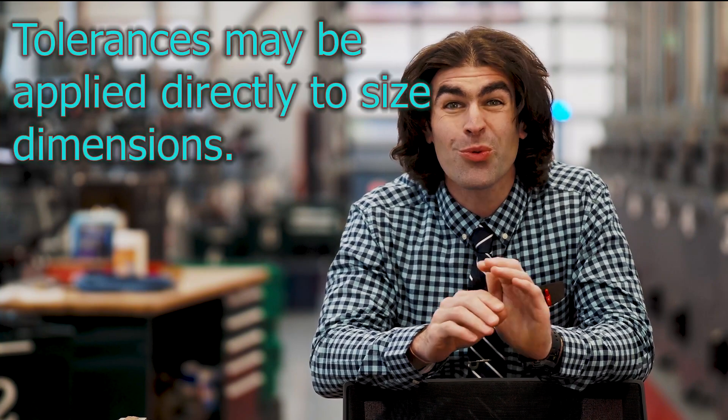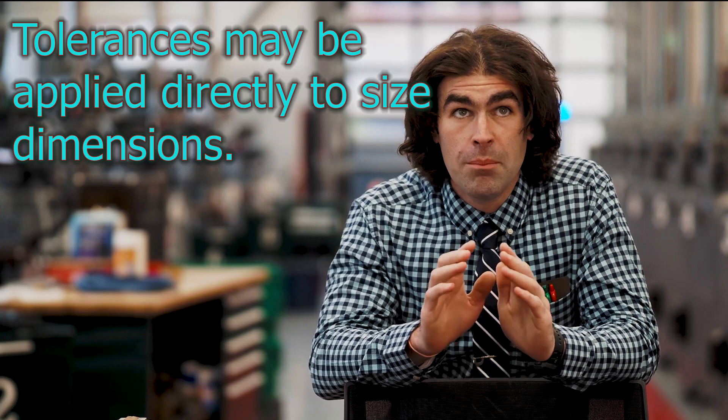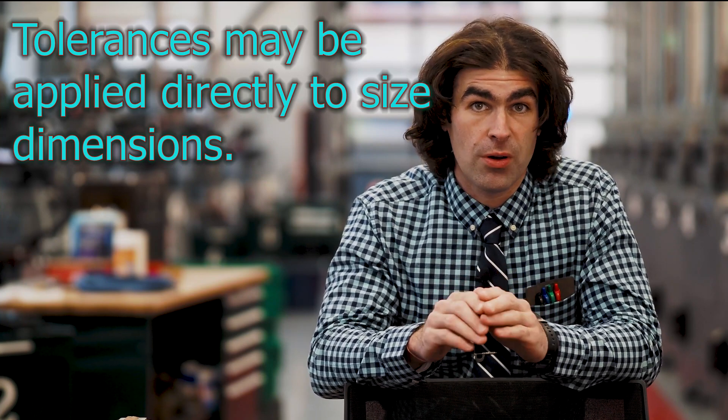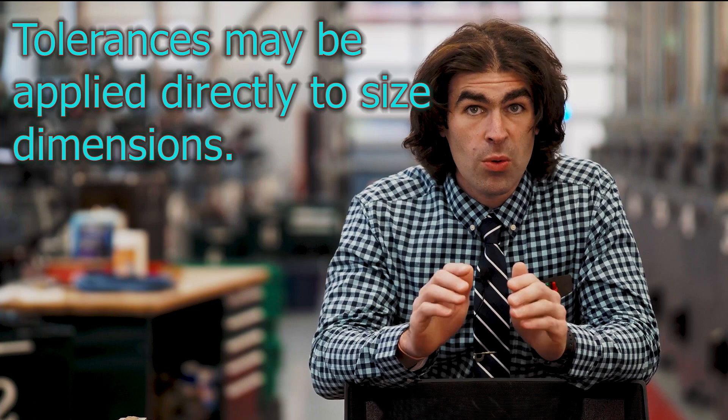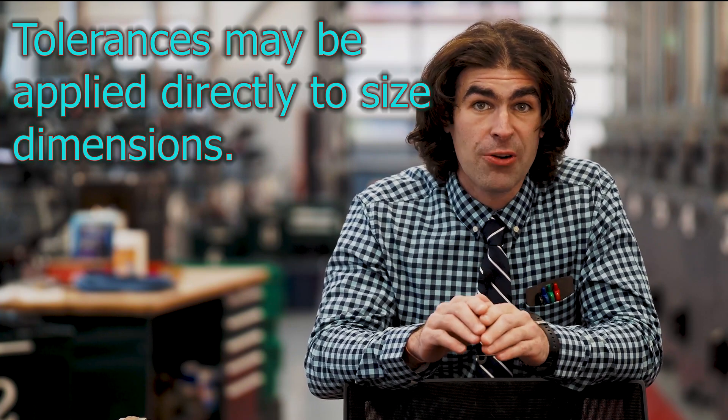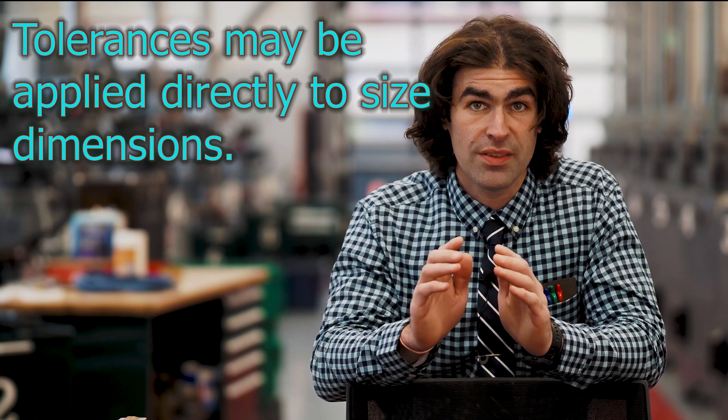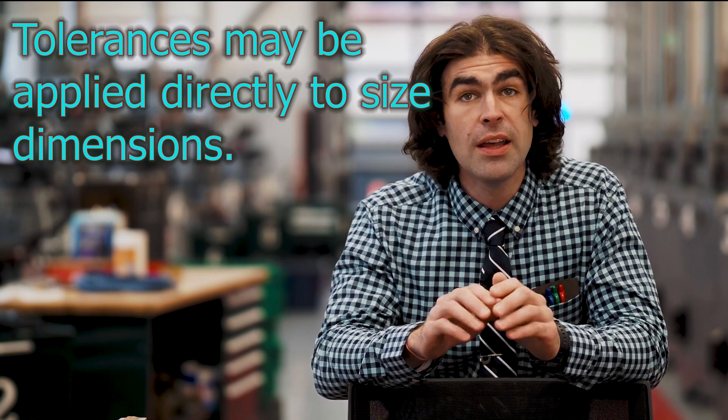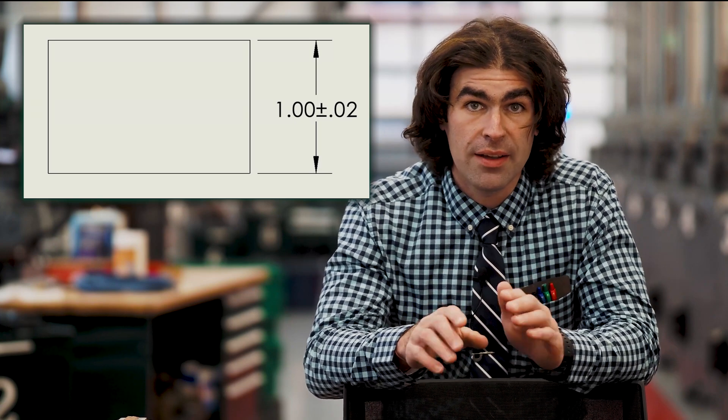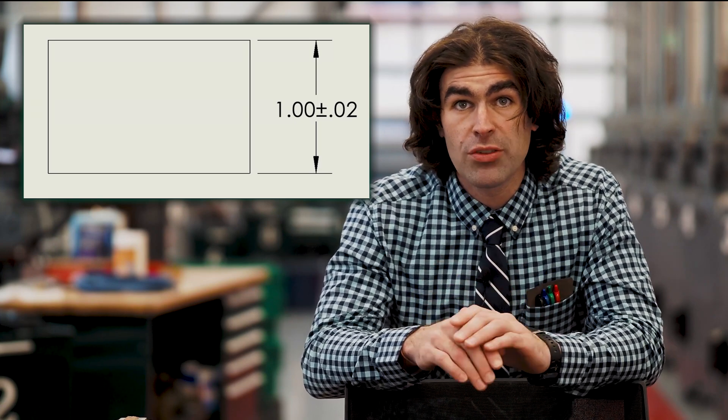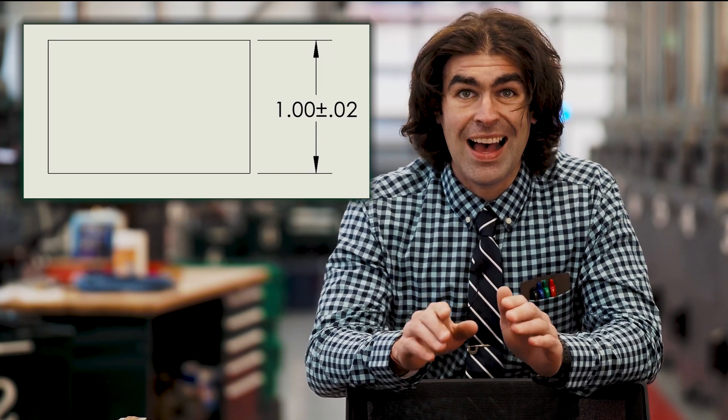So let's keep rolling with sentence number two. Tolerances may be applied directly to size dimensions. So may means that something is optional in the ASME standard. What this implies is that geometric tolerances may also be used to tolerance size dimensions. So a size dimension is a feature of size, something like a cylinder or a hole or a width. So I've got some examples up here. A typical size dimension would be the height of a block. So we've got a rectangular feature with one inch plus or minus 20 thousandths. That is a size dimension.